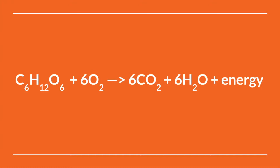Here we have our reaction for cellular respiration — this should be familiar. We have glucose and oxygen as reactants, and in our products we have carbon dioxide, water, and energy. Looking at this reaction, we could measure the rate of cellular respiration in lots of ways: we could measure the amount of glucose consumed, the amount of oxygen being consumed, the amount of carbon dioxide being produced, or the amount of water being produced. In this lab, we are going to measure the rate of cellular respiration as the amount of oxygen consumed.